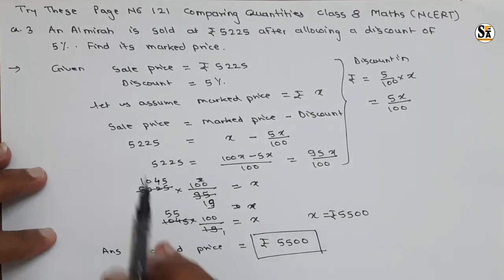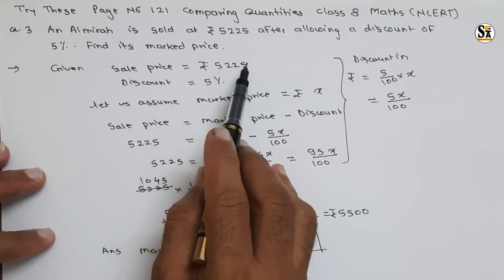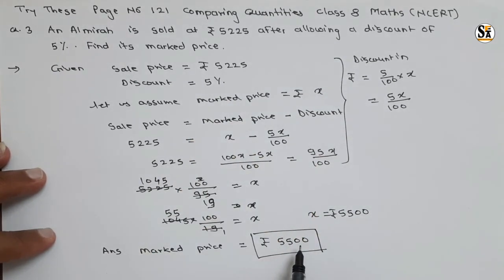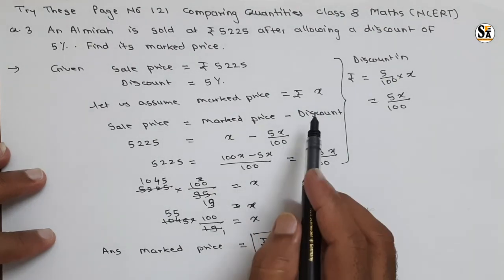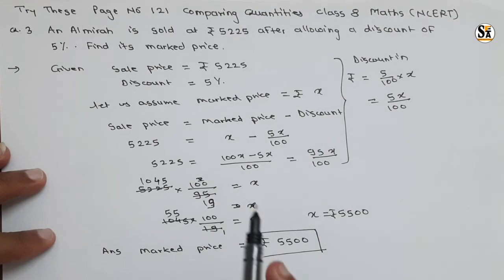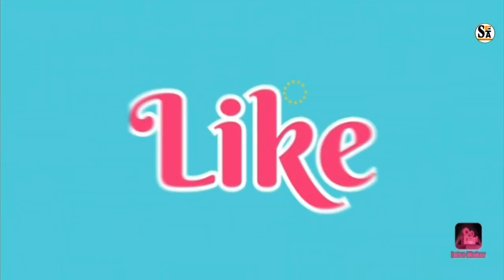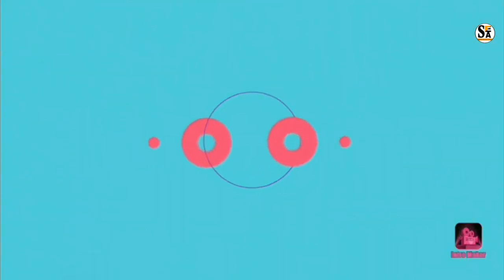Sale price is 5,225 which is less, and mark price is 5,500 which is more, because a discount of 5% was given. This is our final answer. This is all for this video. We will meet again in our next video. Do learn, do enjoy. Thank you.